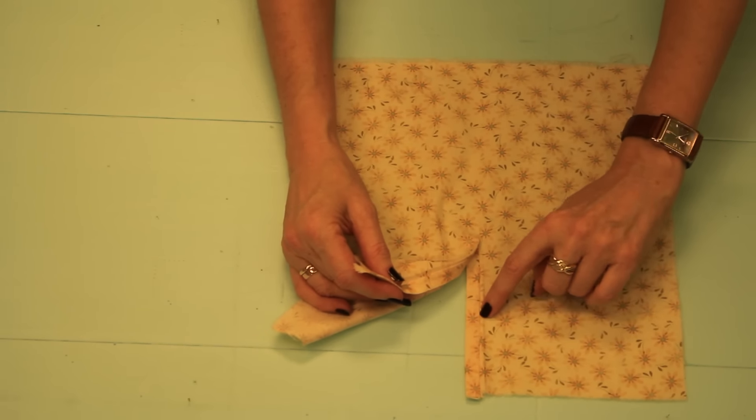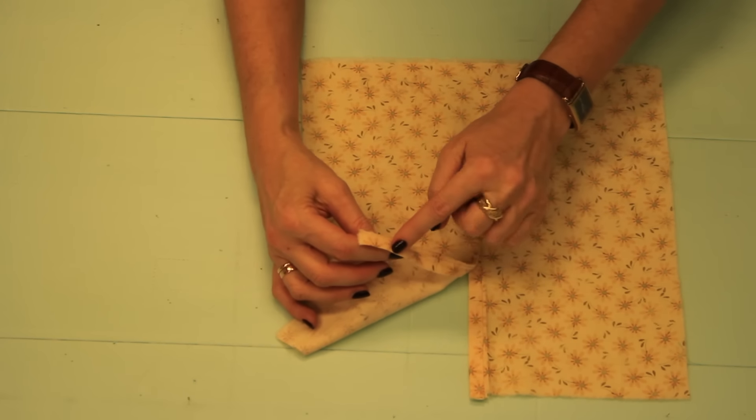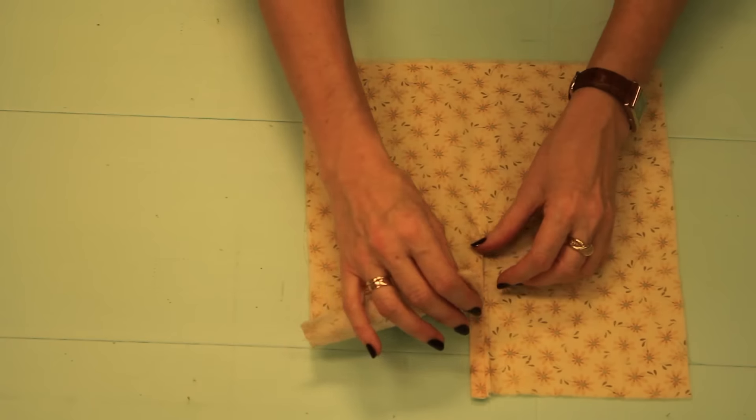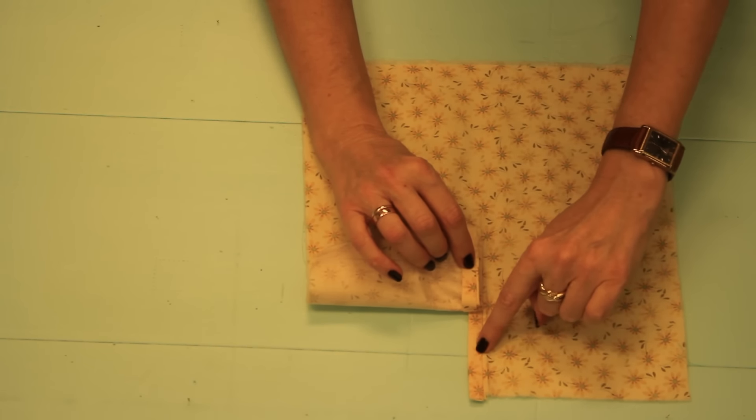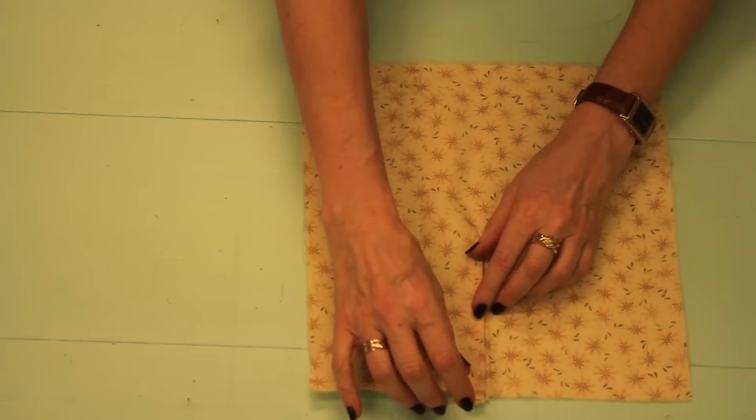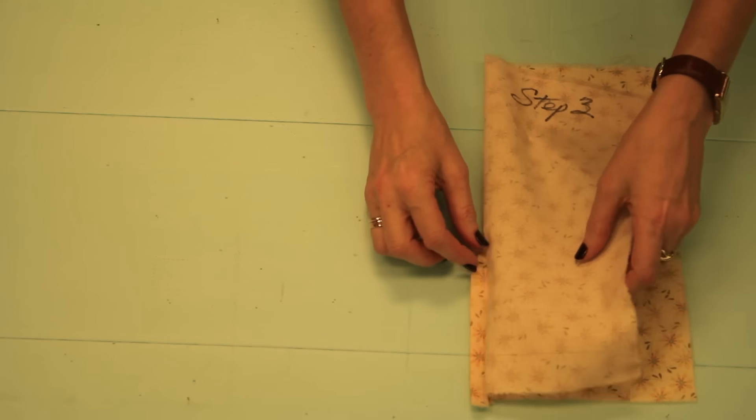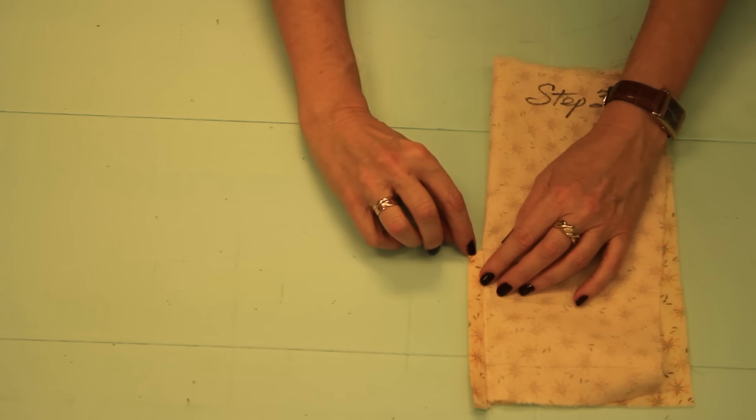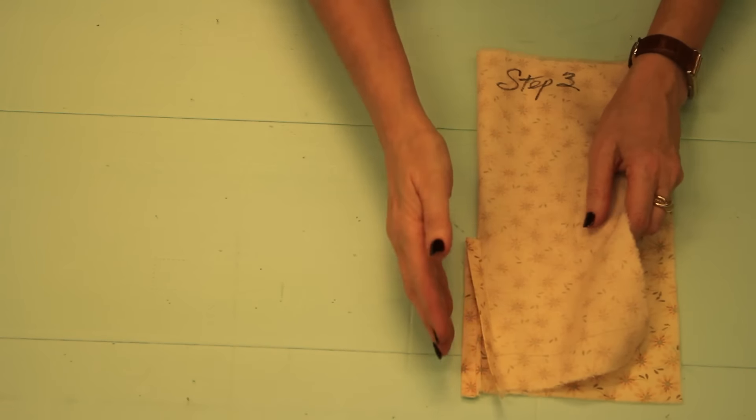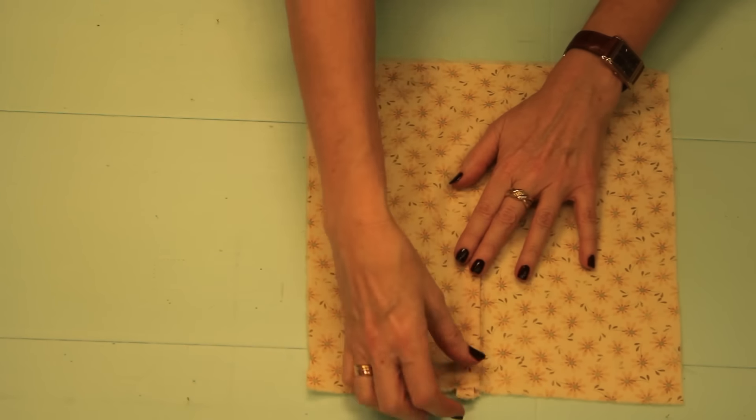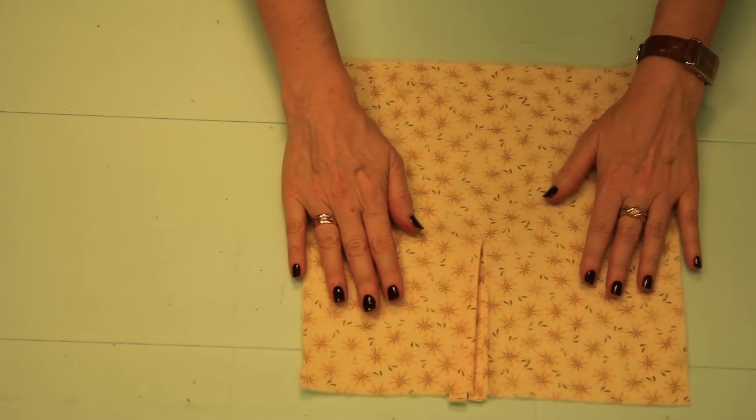Once you've stitched in the ditch, press one side under because that's what makes the overlap. This side sticks out, makes the underlap. The very last thing to do here is machine stitch at a diagonal so that that will line up beautifully at all times. And that's your continuous lapped placket.